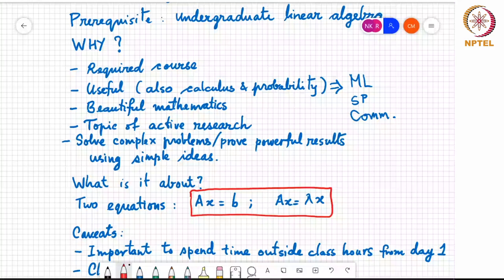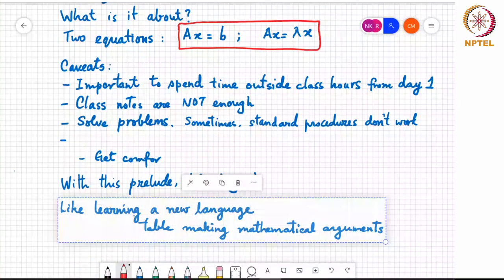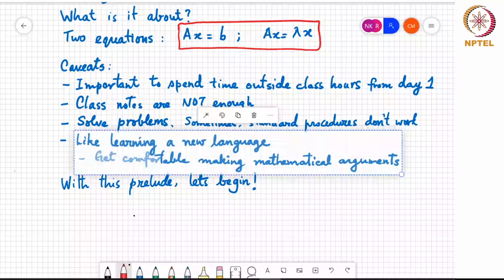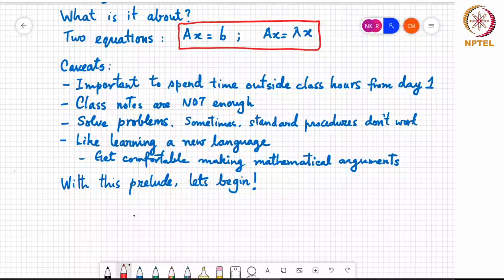So there are a few caveats I want to point out right off the bat. Yeah. So one thing is that in any mathematical course, during the class, when arguments are presented to you, it looks very simple. I can assure you of that. Or it looks fairly simple and you feel like you understand everything. But it's very important to spend time outside of class from day one. You should look at the textbook, you should look for other material, you should try to solve problems. The class notes are not going to be enough. And when you solve problems, you will realize that sometimes standard procedures don't work and problems end up requiring you to look for some special way to handle some corner cases. And in some ways, it's also like learning a new language, where we get comfortable making mathematical arguments.